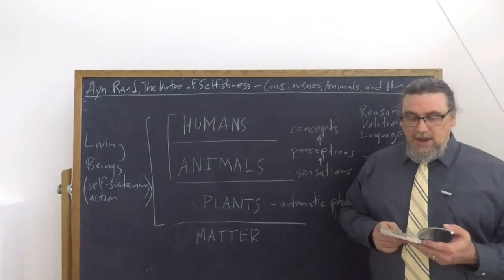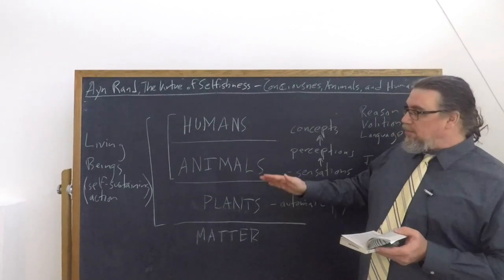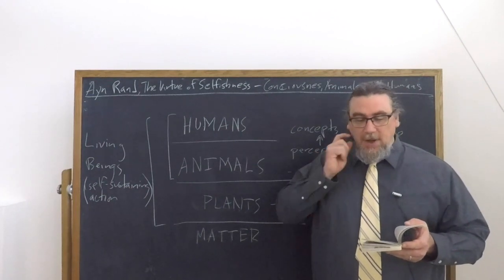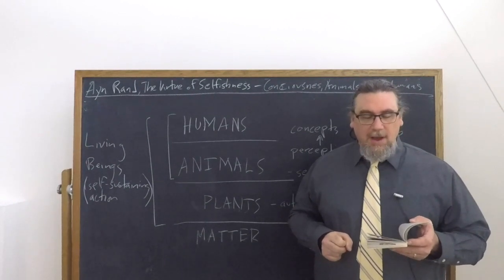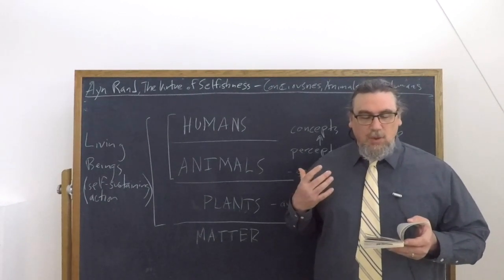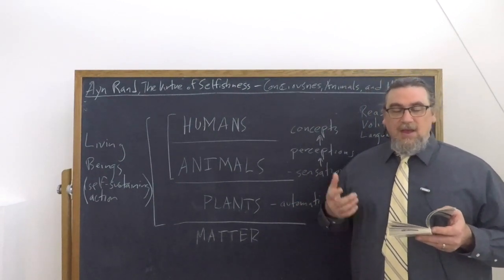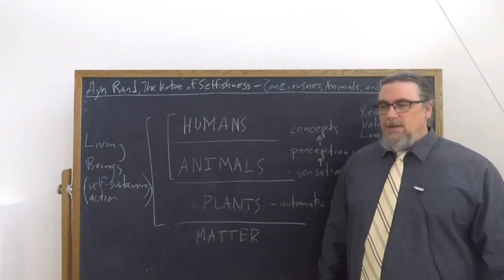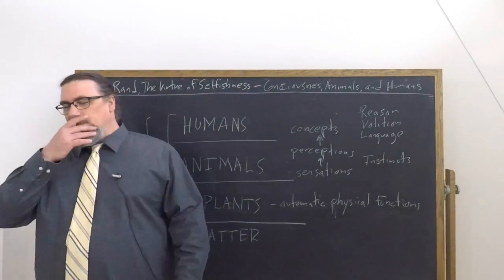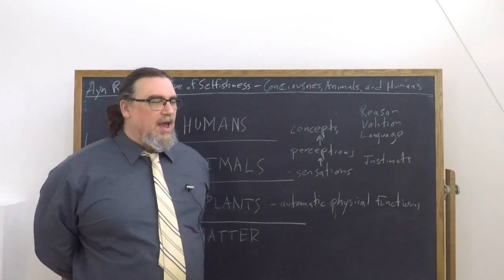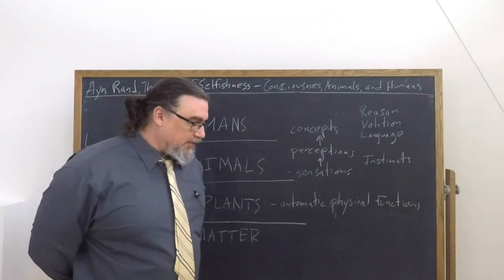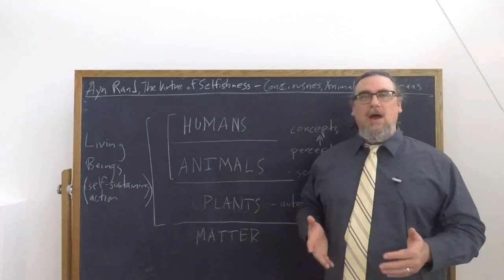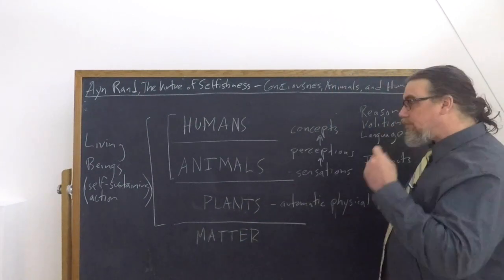It's only living things that could be said, and when we're talking about plants in a very metaphorical way, even lower animals, to care about whether they continue to exist, but they are self-sustaining entities. They engage in self-sustaining action to allow themselves to maintain their being, whatever it happens to be. So she says that an organism's life, now we're talking about plants, animals, humans, of course, bacteria and fungi as well. We can talk about other kingdoms of life. An organism's life depends on two factors, the material or fuel, which it needs from the outside, from its physical background, and the action of its own body, the action of using that fuel properly.